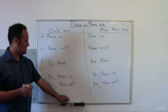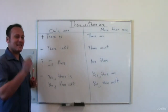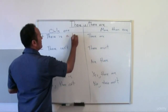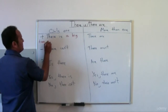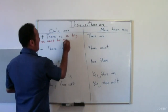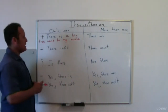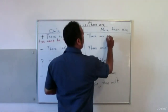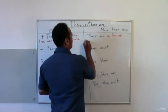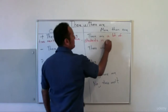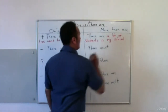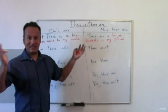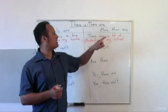Let's create some sentences so you can understand a little better. 'There is a big tree next to my house.' A big tree — only one — so we use 'there is'. What about 'there are'? 'There are a lot of students in my school.' Students — not one, but maybe 10, 20, a lot — more than one, so we use 'there are'.